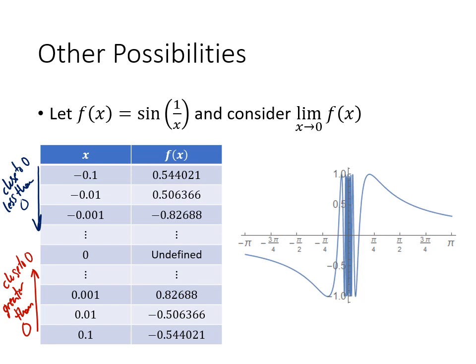And what I'm seeing is that I'm not actually seeing a distinct pattern. So I get 0.544, 0.506, negative 0.82. And if I keep plugging in numbers that are getting closer and closer to zero, they're just going to keep bouncing around, I'm not going to see any pattern. And the same thing is going to happen from the other end. They're just going to keep bouncing around and nothing really, no pattern is really going to emerge.